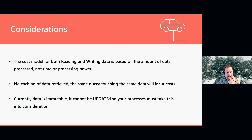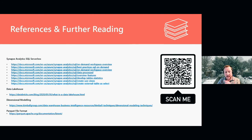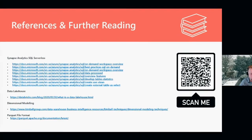Regarding considerations: the cost model is based on the amount of data processed, so factor that into your budgeting — the amount of data read and written determines your charge. Currently there's no caching of retrieved data, so if you use the same dimension multiple times you're reading from storage multiple times. Also, data is currently immutable — it can't be changed or updated — so you need to factor that in when writing your data out.